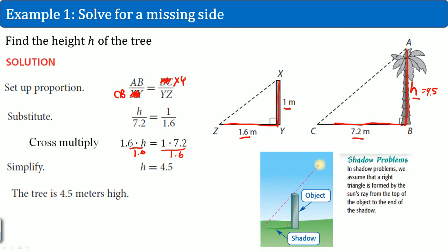Something that you should notice is that these are shadow problems. In shadow problems, we assume that there's a right triangle that is formed. When the sun's rays that shines is from the top of the object, it hits the ground.